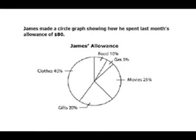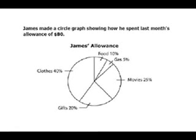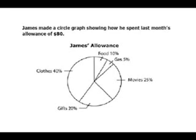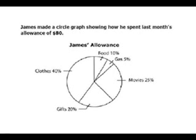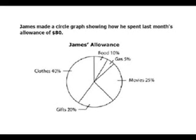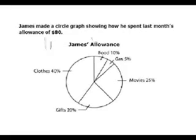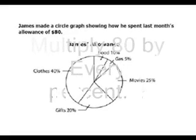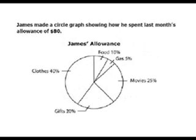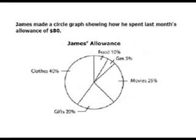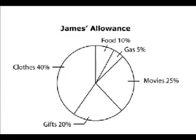James made a circle graph showing how he spent last month's allowance of $80. It shows you a pie graph and the percentage of how much he spent. Now, let's translate those percentages into real numbers. You multiply 80 by the percentage. Now you have the percentage — let's multiply.